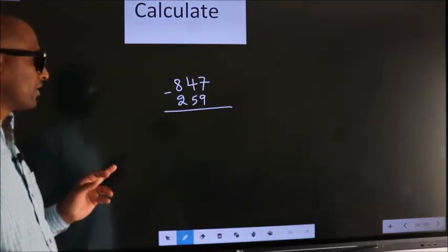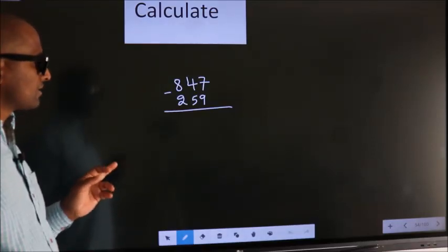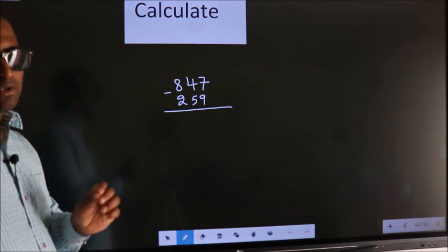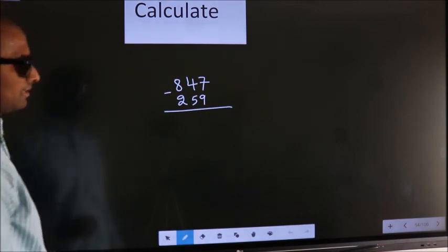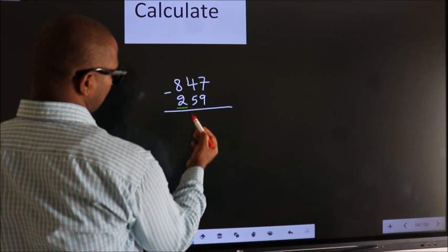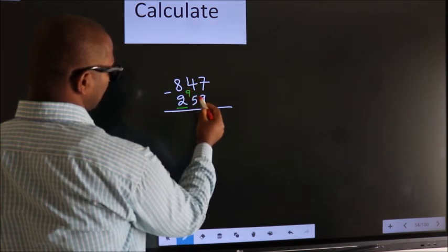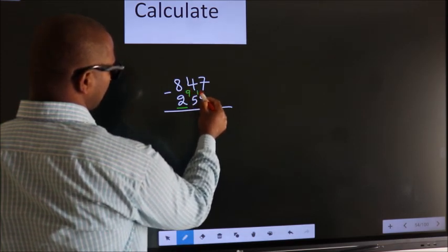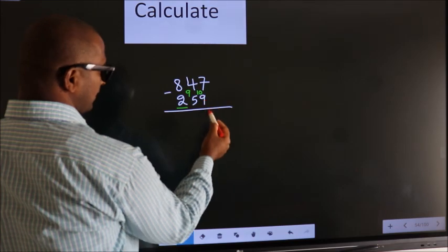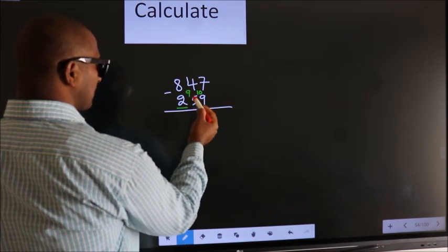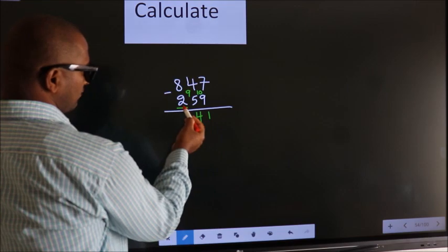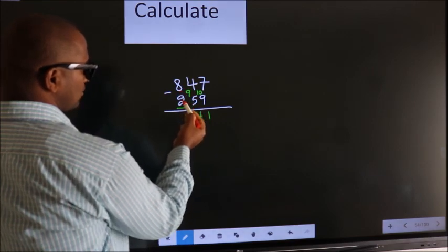Calculate 847 minus 259 — how do we calculate this faster? You leave the first digit here, you write 9, you write 10. Now 10 minus 9 is 1, 9 minus 5 is 4, for the first digit 8 minus 2...